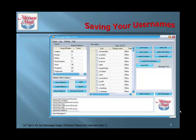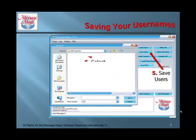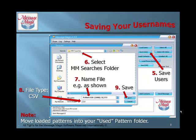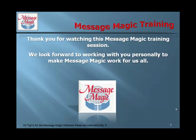Saving your usernames: first, click on Save Users, then select the MessageMagic Searches folder. Name the file as shown, and save it as a file type CSV. Then click Save. Note: move loaded patterns into your Used Patterns folder. Thank you for watching this MessageMagic training session.